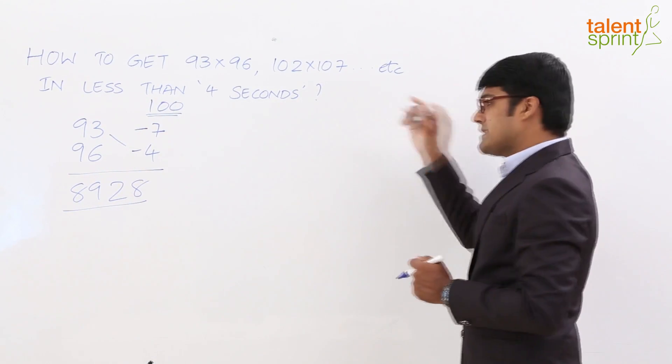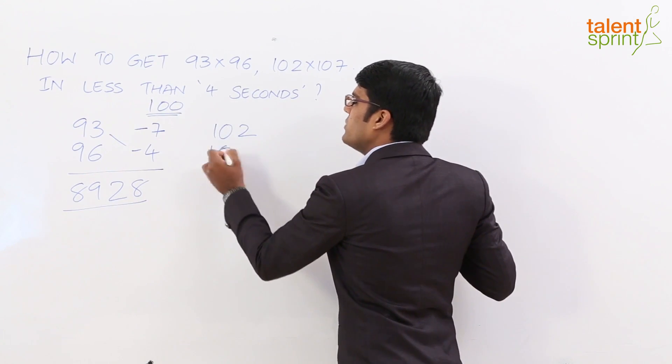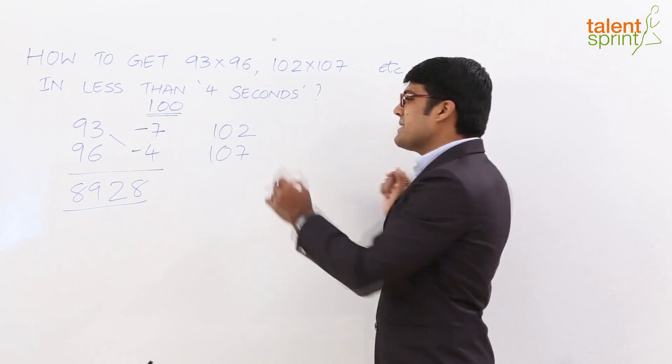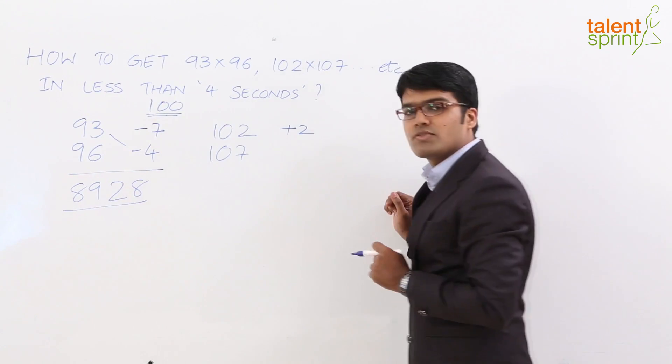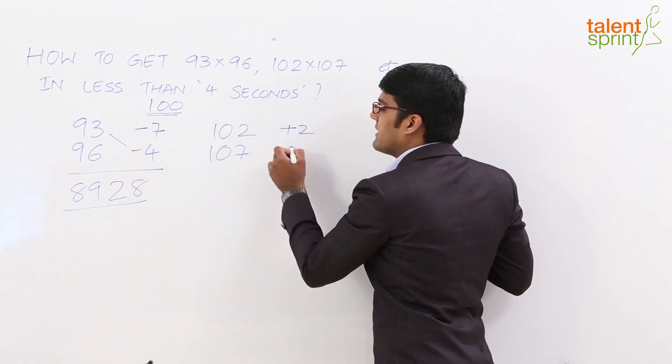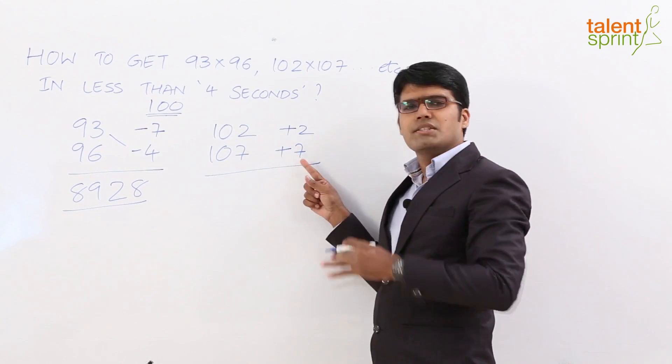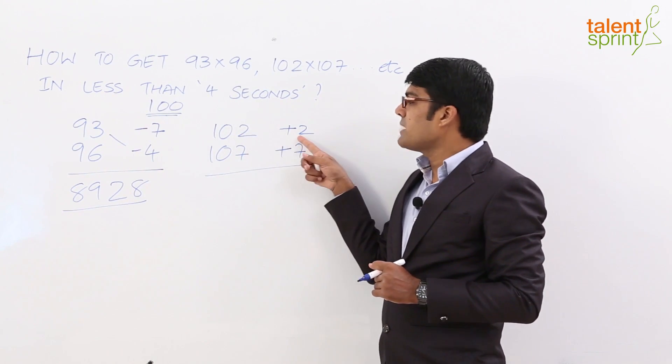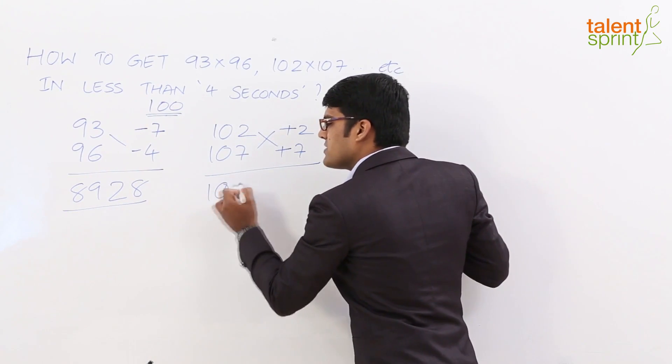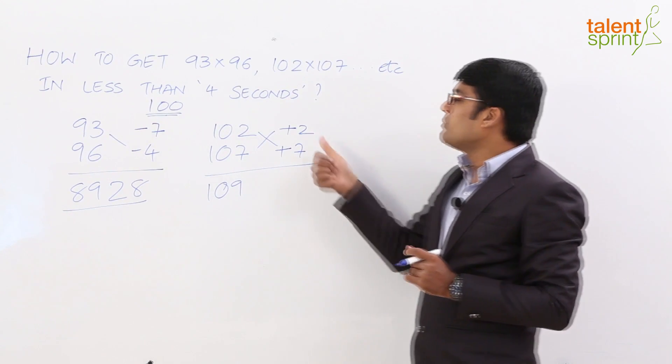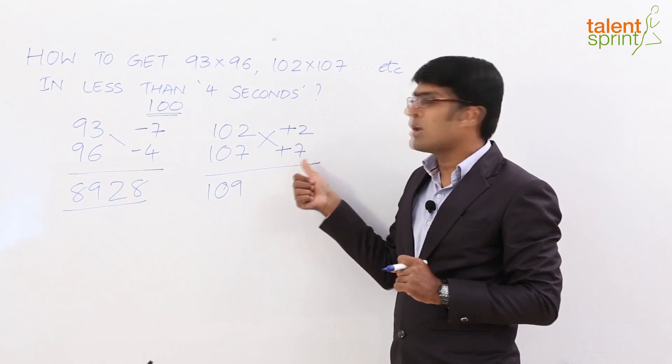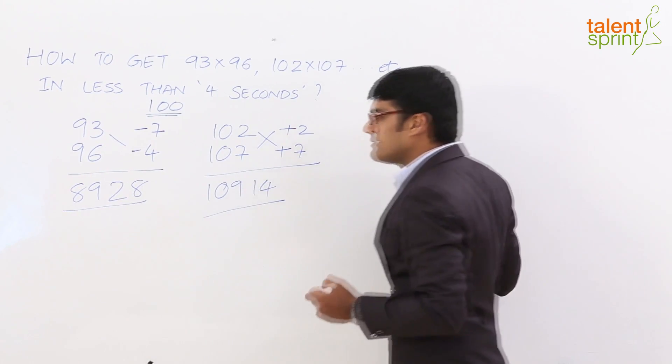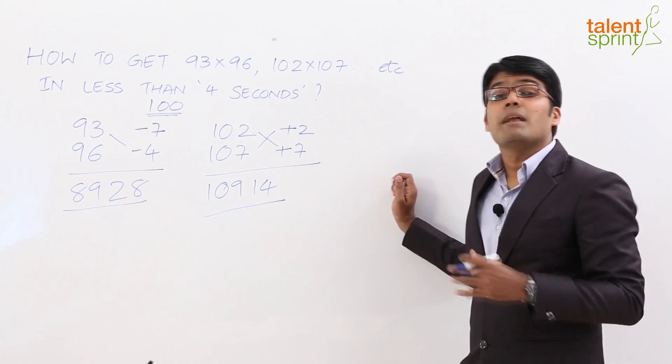Let us look at another example. Let us say 102 into 107. What do we do in this case? Again, the same concept. Take the base as 100. Now you see that 102 is 2 more than 100. So we say plus 2. The distance of this number from 100 is plus 2. Similarly, 107 is 7 more than 100. So this is plus 7. Again, follow the same procedure. Take the cross addition or the cross difference based on the case. So 102 plus 7 is 109 or 107 plus 2 is again 109. So you can take any one of them. So this gives us 109 which is the first part of the answer and then we need to multiply the 2 distances or the differences that we have got. That is plus 2 into plus 7 is plus 14. So the final answer here will be 10914. So this is how easy it is to multiply numbers that are close to 100.